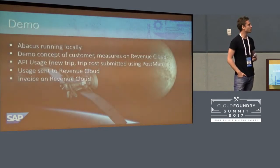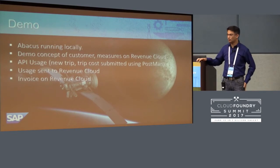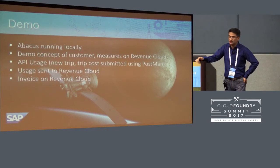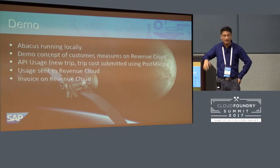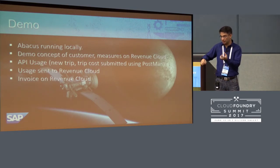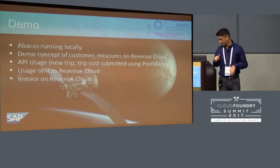Now, demo time. The way we've structured the demo: I have Abacus running locally on my notebook — I could have run it in a Cloud Foundry instance. I will generate certain usages, meaning some applications are calling certain APIs. I'll generate that in Postman and send it to CF Abacus. From there it will be picked up by some kind of integration platform, and that usage will be sent to Revenue Cloud at the end of the month or whatever frequency we define.